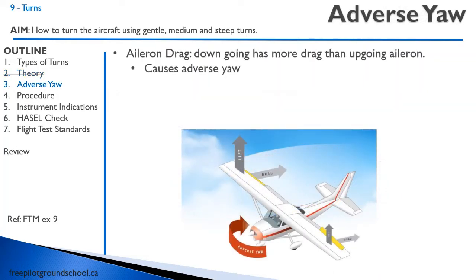We have a phenomenon called adverse yaw that becomes apparent during turns. Adverse yaw is when the aircraft yaws away from the direction of the turn — one of the reasons we use rudder is to counteract it. In light aircraft it's typically caused by aileron drag: the down-going aileron has more drag than the up-going aileron because it extends further into the airstream. As a result, when you roll, many aircraft will not turn the way you want without adding rudder.